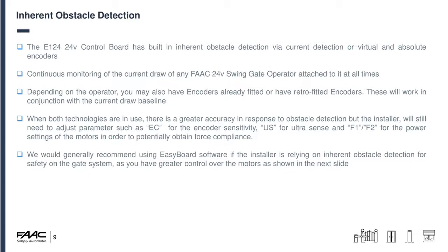When the control board runs setup it sets a baseline of what the normal running current is for those motors in conjunction with the power setting you give it. When the board then starts running it compares against what the baseline was when it learned versus what the board is currently doing. If those start deviating too much or current increases too high, the board will think it has an obstacle. Depending on the operator, you may also have encoders already fitted — like the S450H or the S800 ENC — or retrofitted encoders, which work in conjunction with the current draw baseline.